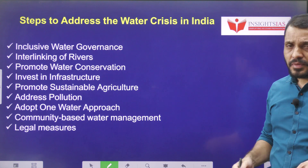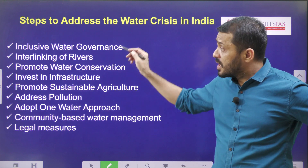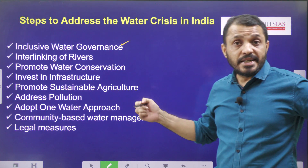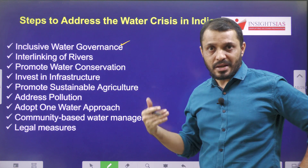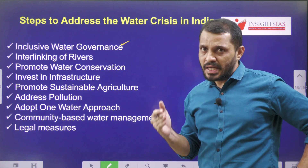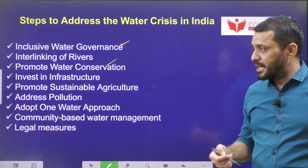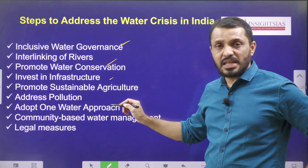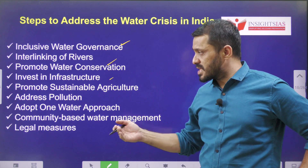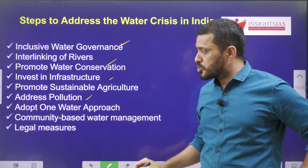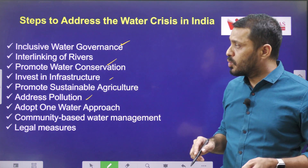We can address the water crisis through the following steps: inclusive water governance; interlinking of rivers, because certain basins receiving more rainfall can be interlinked with deficit ones; promoting water conservation through water pits and similar measures; promoting sustainable agriculture by discouraging excessive use of fertilizers and water; and addressing water pollution.